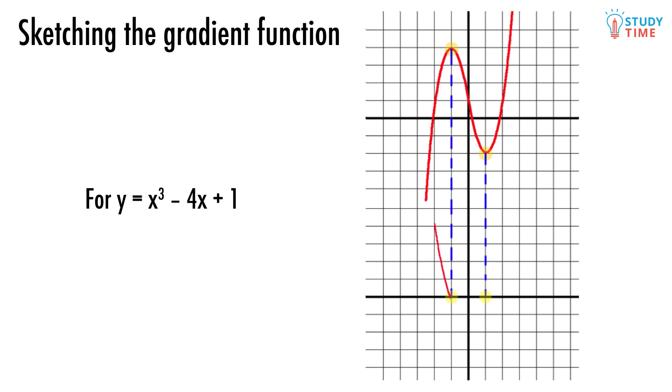Now what about the space that's between the two turning points? Since the line is going down for that entire area, the gradient for the same spot will have to be below the x axis. Looking good.